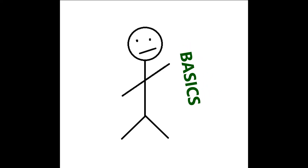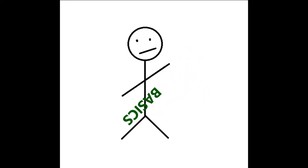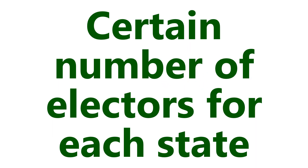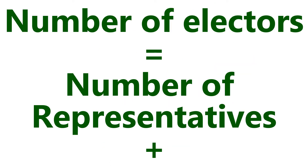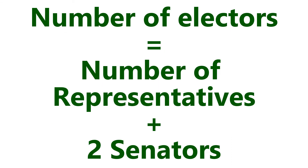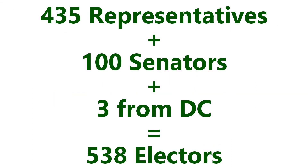Now that we've got the basics under our belts, let's get a little more complex. The Electoral College has a certain number of electors for each state. The number of electors each state gets is equal to the number of people in the House of Representatives from that state, plus the two senators from that state. That gives us a grand total of 538 electors.